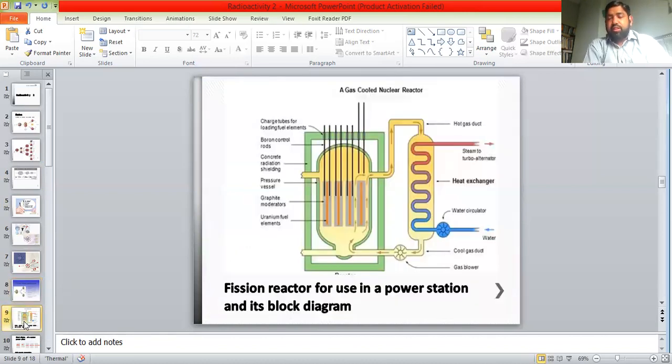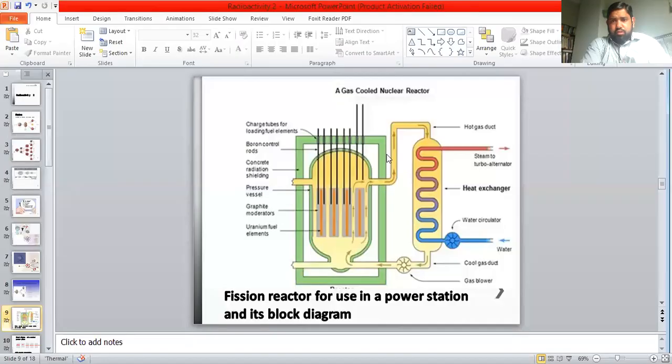We will discuss how we use it in our reactor. This is a simple diagram. First, we have a lead container which will not allow any radiations to escape. Then we have a pressure vessel which can contain this reaction and heat. Then we have some boron rods which can be inserted inside the uranium fuel to absorb neutrons.